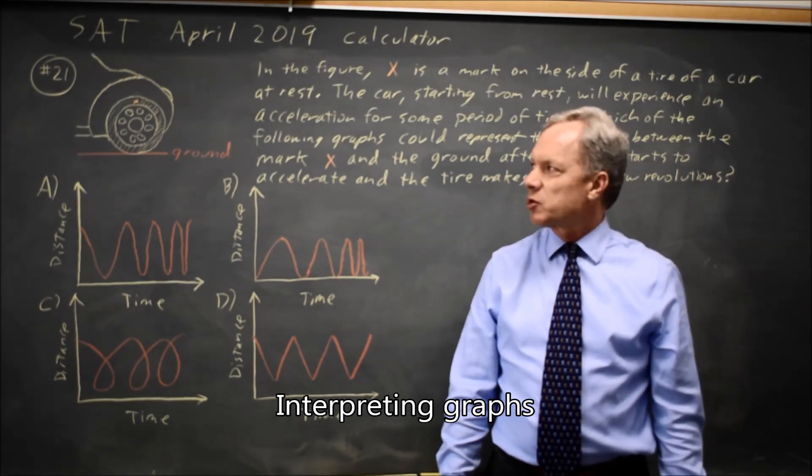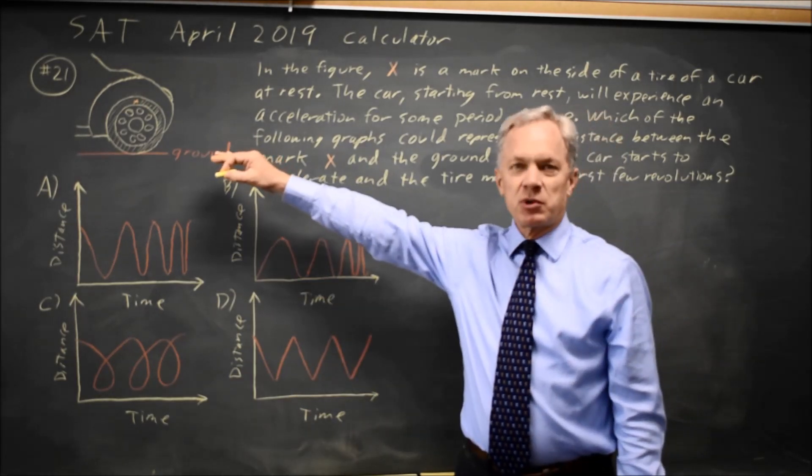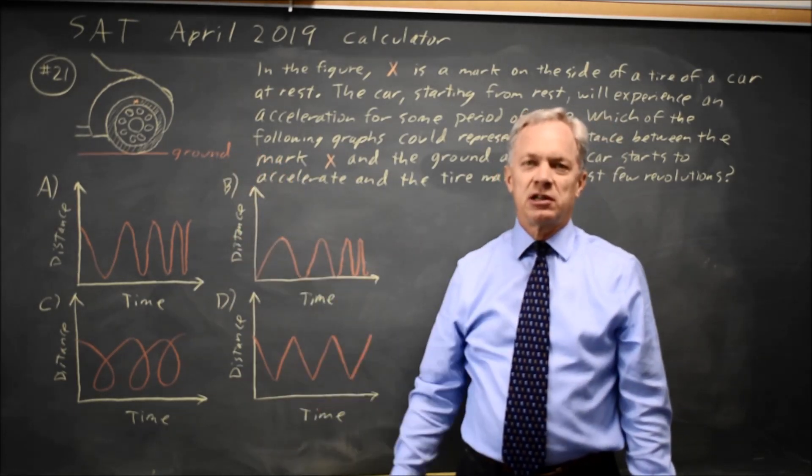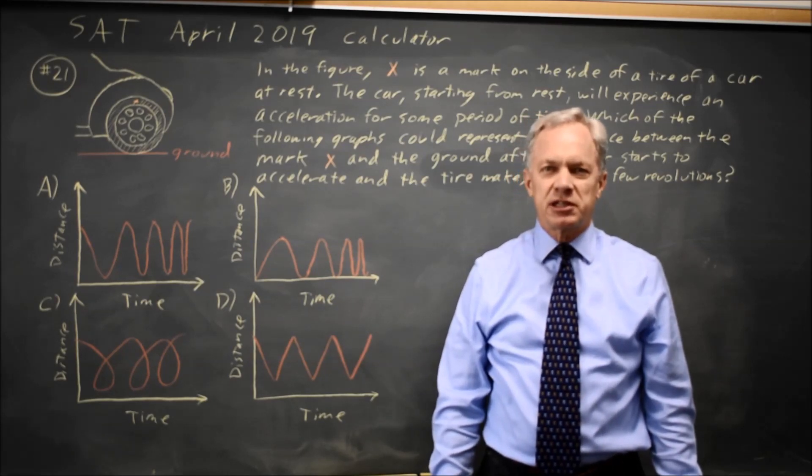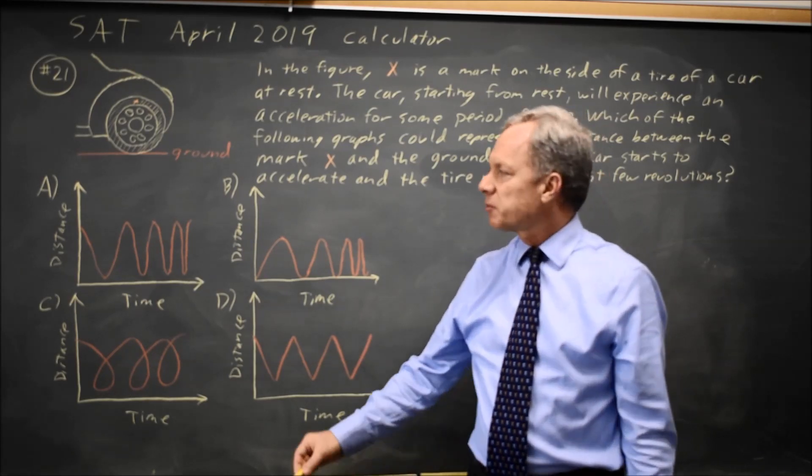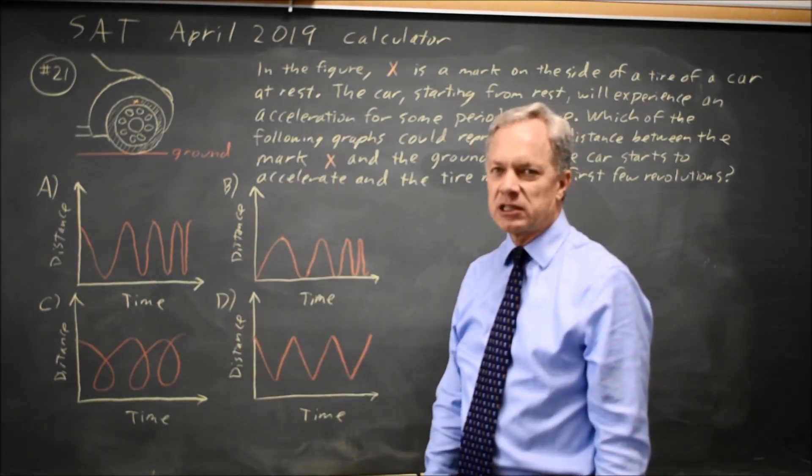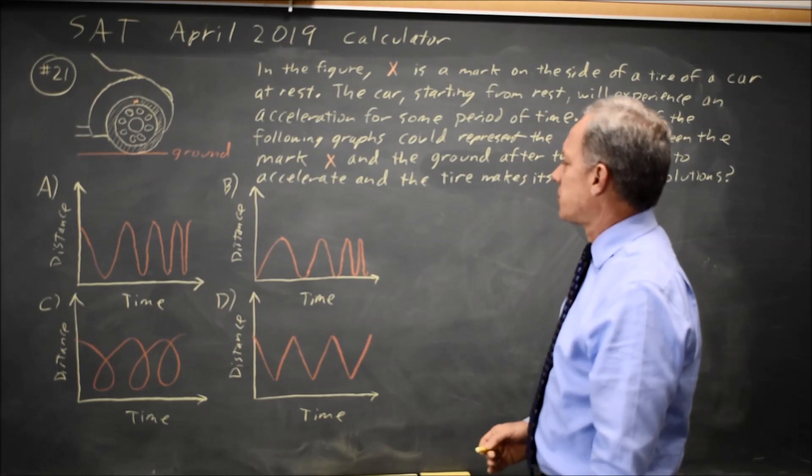This is calculator question number 21 on the April 2019 SAT. The College Board gives us a picture of a mark on the side of the tire of a car and a description of the situation in which this car accelerates from rest, and the graph represents the height of the mark above the ground as the car is accelerating.